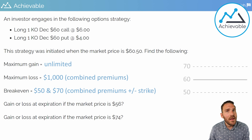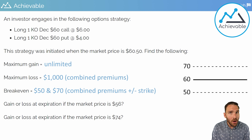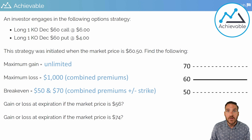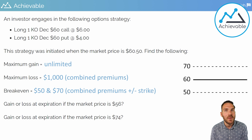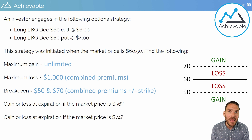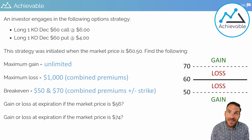Add both premiums: 6 plus 4 equals 10. Then add and subtract that 10 from the common strike price: 60 plus 10 is 70, and 60 minus 10 is 50 — those are the two break-evens. If the market price goes to 70, the call is $10 in the money; the investor buys at 60, sells at 70, makes a $10 profit that fully offsets the premiums. If the price goes to 50, they buy stock at 50, exercise the put to sell at 60, make $10 profit, and that offsets the premiums. The investor profits above 70 or below 50; worst case is at 60 when both options expire worthless.